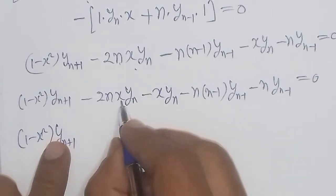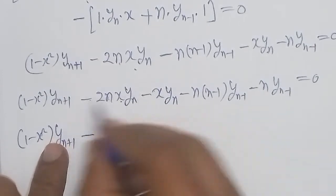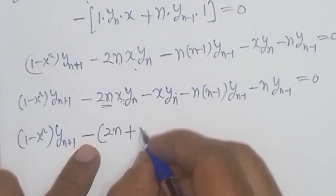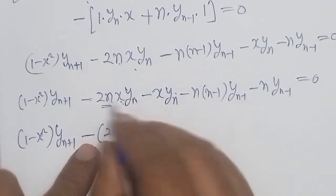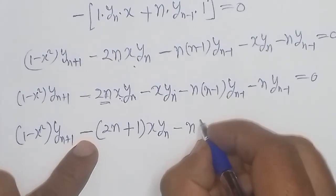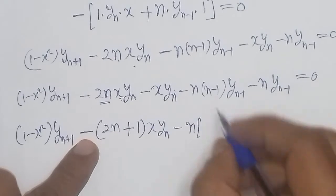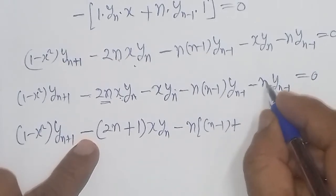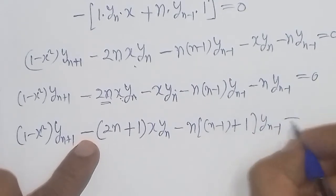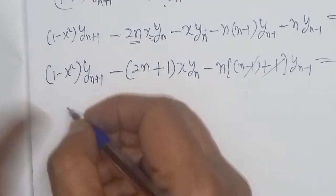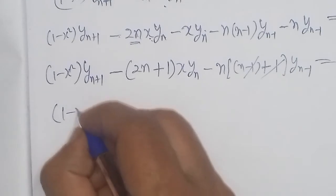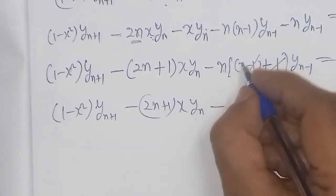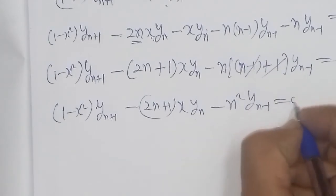Taking x common from the middle terms: minus 2nx·yₙ minus x·yₙ gives minus (2n+1)x·yₙ. For yₙ₋₁ terms: minus n(n-1)·yₙ₋₁ minus n·yₙ₋₁ equals minus n²·yₙ₋₁. Therefore: (1 minus x square)·yₙ₊₁ minus (2n+1)x·yₙ minus n²·yₙ₋₁ equals 0. This is what we had to prove. Thank you very much for listening.